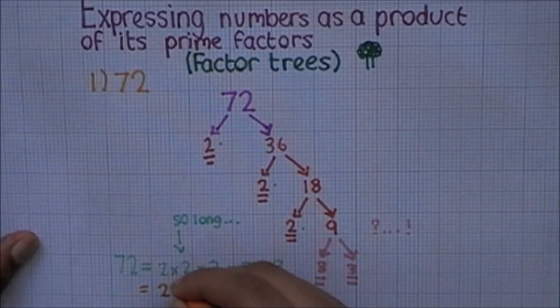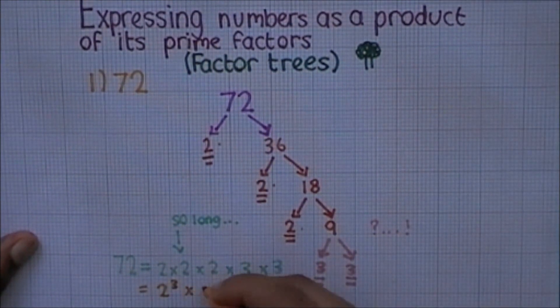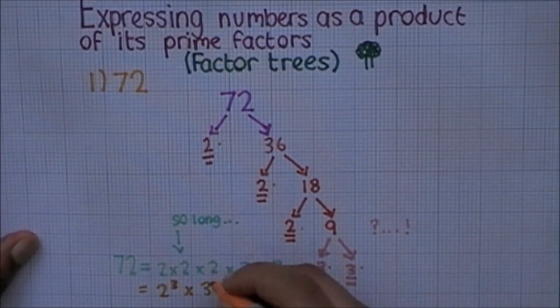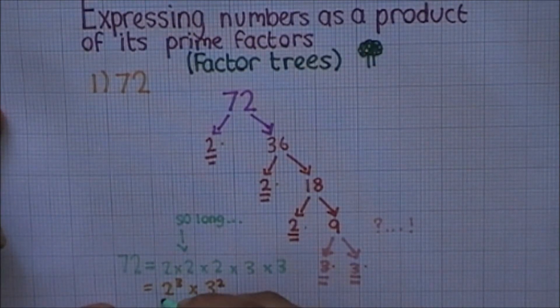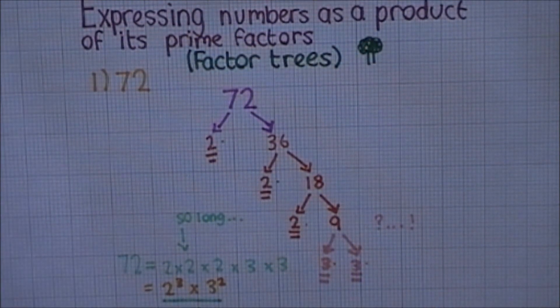Now there are 3 2s in this factor tree, so we can write 2 to the power of 3, to let us know how many 2s we have. We can also do the same to the number 3, of which there are 2 numbers, so it would be 3 to the power of 2.